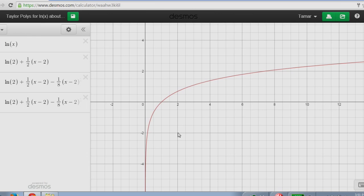So here's the graph of natural log of x. We're focusing here at x equals 2. The linear approximation is a good approximation of the graph of natural log of x near x equals 2, but we see as we veer outside of a small interval around 2 that the approximation is not a good one.